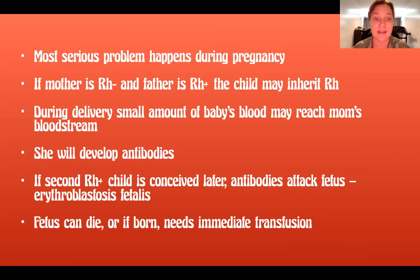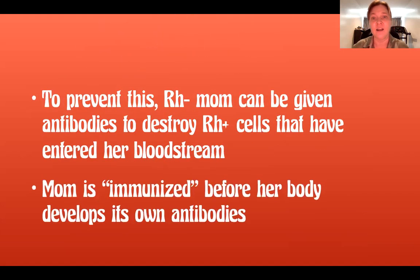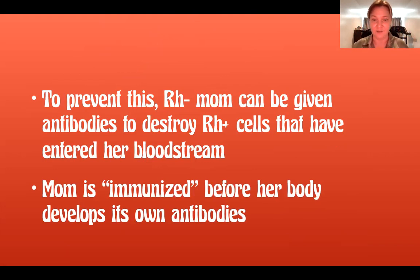The fetus can die, but if it doesn't die after birth, it will need an immediate transfusion. To prevent this from happening, the Rh negative mother can be given antibodies to destroy the Rh positive cells that have entered her bloodstream, so she becomes immune before her body develops its own antibodies.